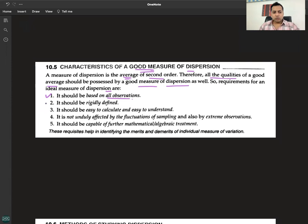It should be rigidly defined. It should be easy to calculate and easy to understand. It is not unduly affected by the fluctuations of sampling and also by extreme observations.